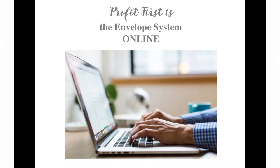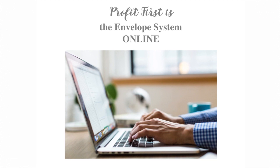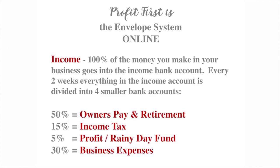The Profit First system is essentially the envelope system online. Instead of physical envelopes, you have different bank accounts. Let me show you on my screen — everything you see in red represents a different bank account, and we're going to have five of them.